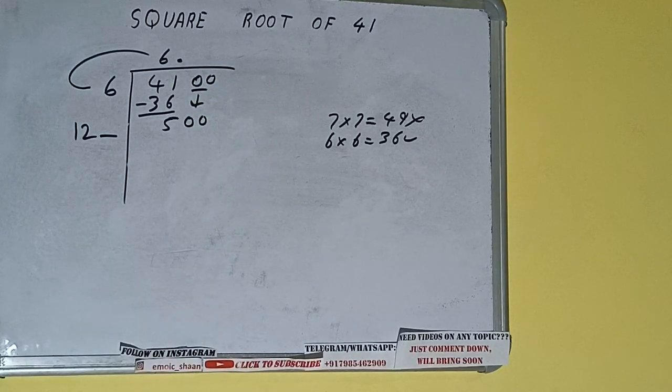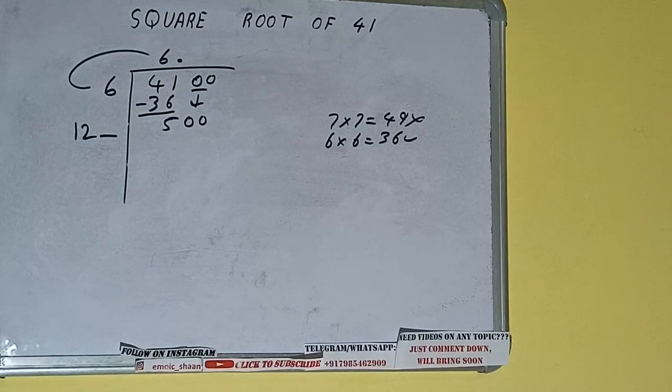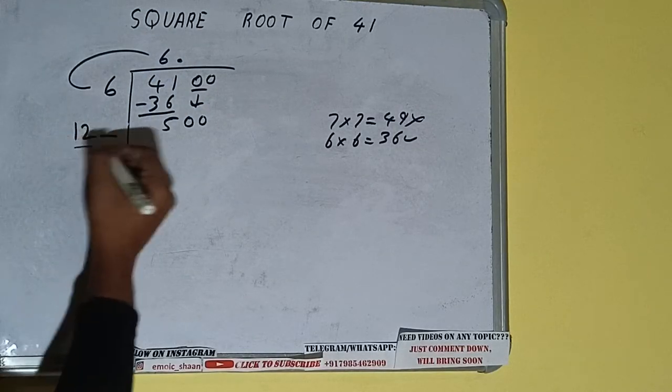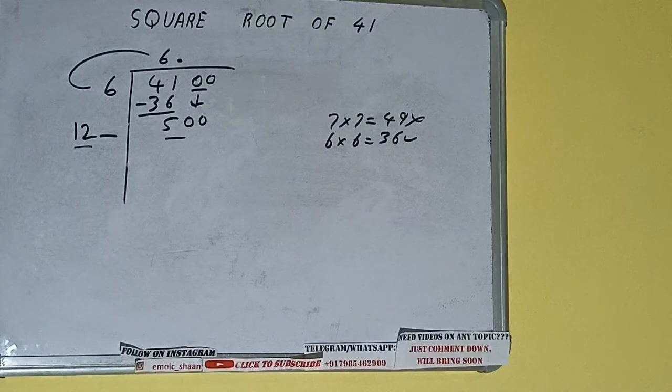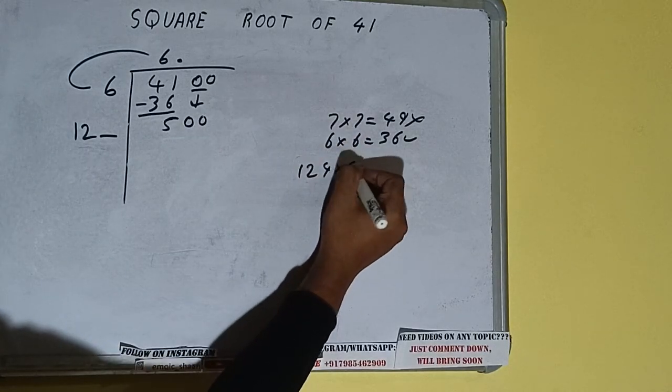Now whatever number we write here, we have to write here also. We can compare this 12 and 50. So 12 times 4 is 48, so we can try 4 times. 124 into 4.